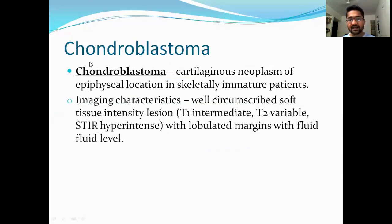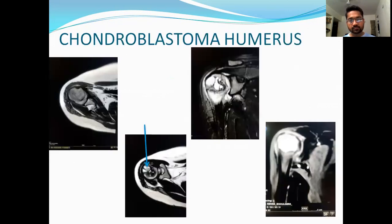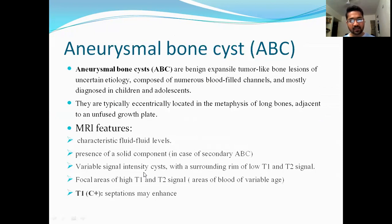Next is chondroblastoma. It is a cartilage spectrum lesion located in the epiphysis of skeletally immature patients. Signal intensity on T1-weighted images is intermediate. It is variable on T2 and hyperintense on STIR. Here is a case of chondroblastoma of the humerus showing hyperintense fluid component on T2-weighted images and characteristic fluid-blood levels.